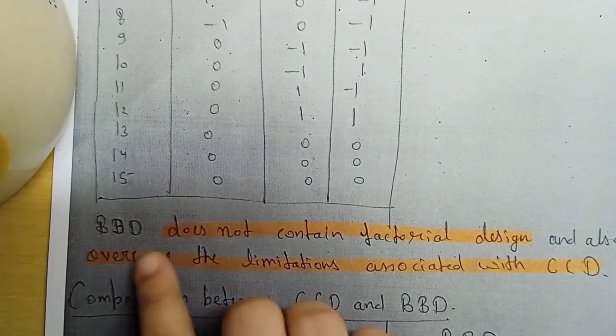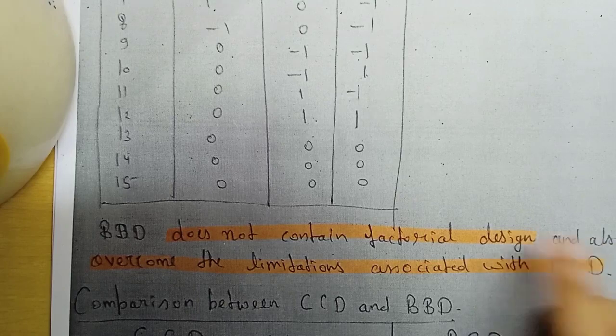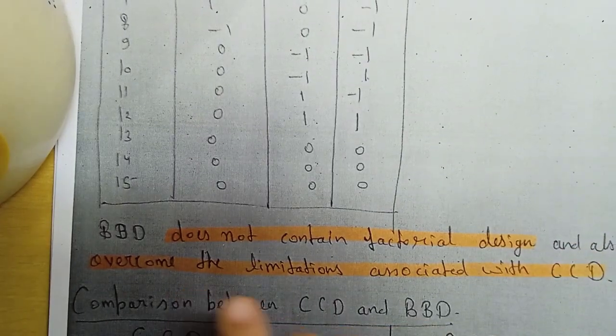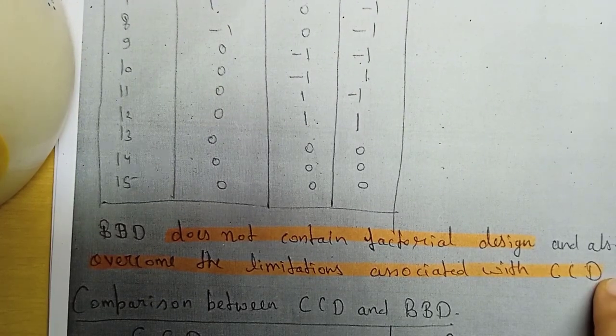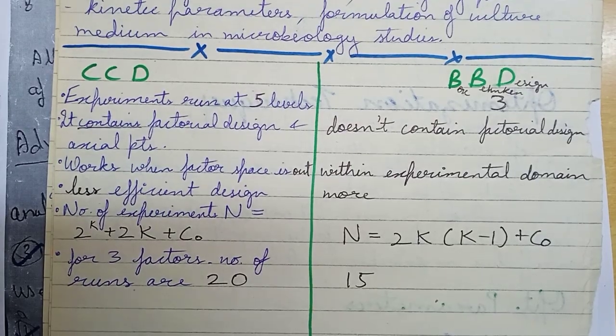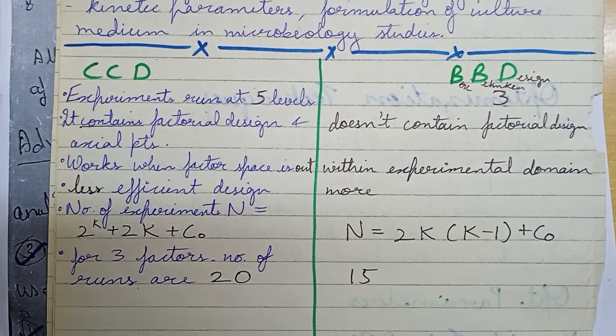BBD is not a factorial design. This overcomes the limitations associated with central composite design. Now, let's see the difference between CCD and BBD.